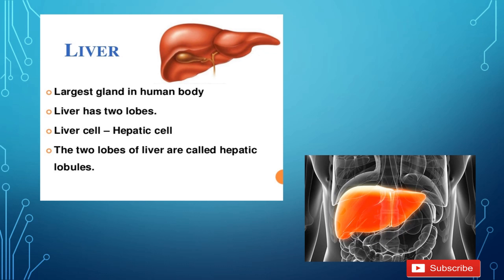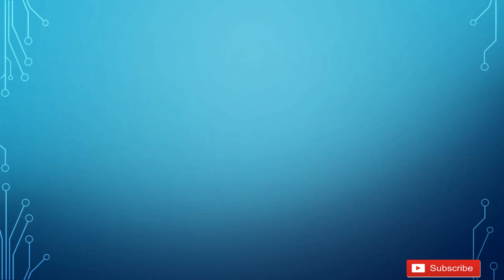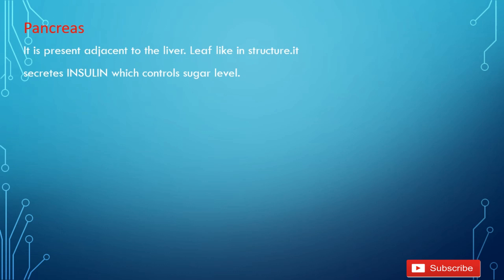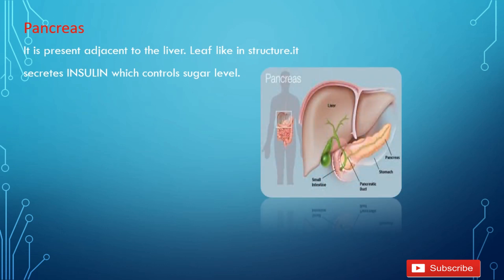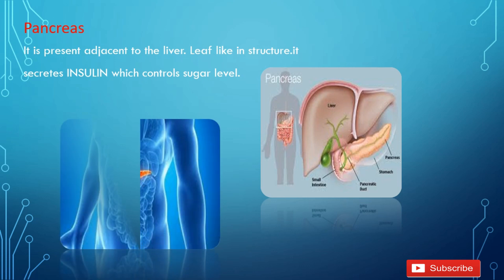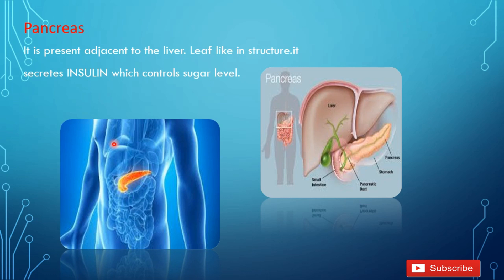Next one is Pancreas. It is present adjacent to the liver as a leaf-like structure. It secretes insulin which controls the sugar level in the blood. You can see here the position of the pancreas — adjacent to the liver, that leaf-like structure is called the pancreas.